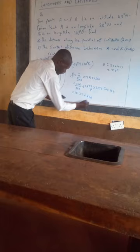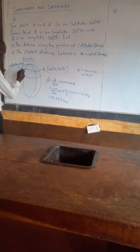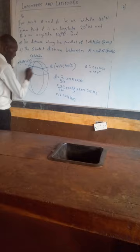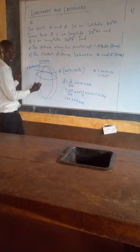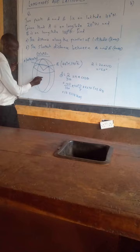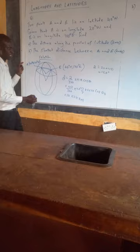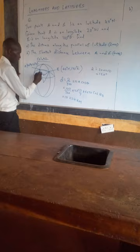For part (b), we find the shortest distance between A and B, which is the distance along the great circle. We draw the two points and note that the longitude difference of 120 degrees forms the angle at the center. Dropping a perpendicular bisects this into two angles of 60 degrees each.